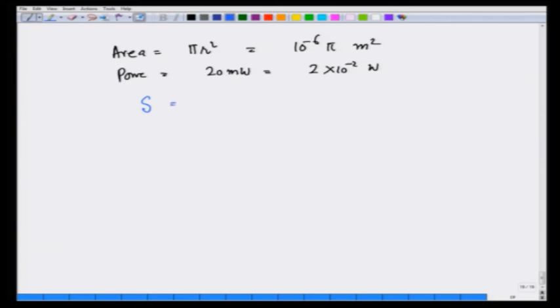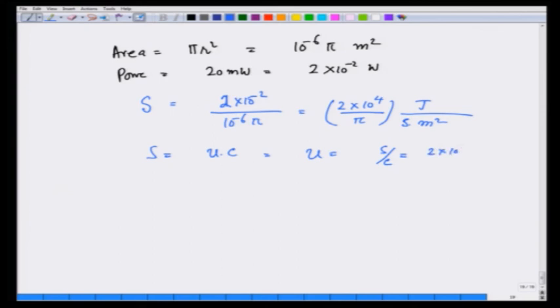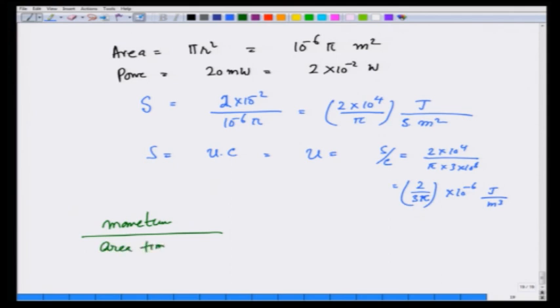Therefore, the S or the Poynting vector is going to be 2 times 10 raise to minus 2 divided by 10 raise to minus 6 pi which is 2 times 10 raise to 4 over pi joules times 3 times 10 raise to 8 which is 2 over 3 pi times 10 raise to minus 6. So, momentum across the surface per unit area per unit time is u which is 2 over 3 pi times 10 raise to minus 6.